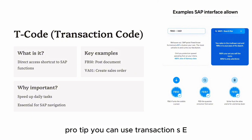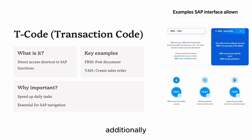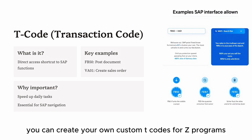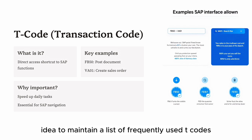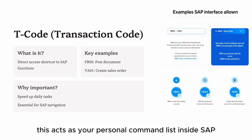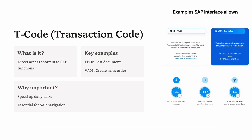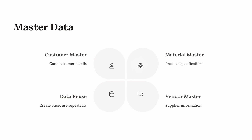Pro tip: You can use transaction SE93 to explore and customize T-codes. SE93 even shows the technical program or screen behind the T-code. Additionally, you can create your own custom T-codes for Z programs — custom developed applications. For beginners, it's a great idea to maintain a list of frequently used T-codes in your specific business area. This acts as your personal command list inside SAP.